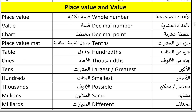Here we have place value and value vocabulary. The first word: place value. Place value. Value. Chart. Chart. It's a chart. Place value mat. Place value mat. Table. It's a table. Multiplication table. Ones. Ones. Tens. Tens. Hundreds. Hundreds.